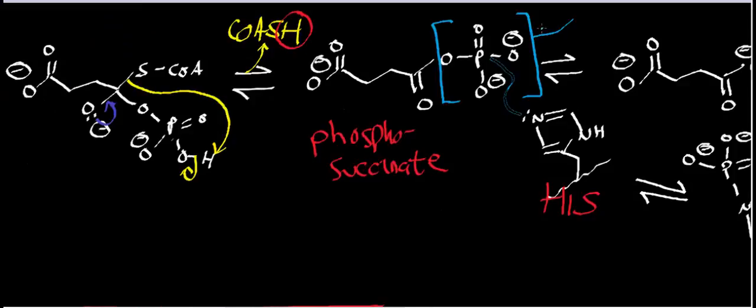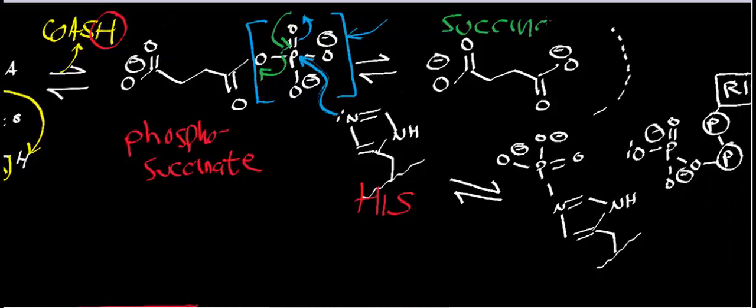Keep in mind, this phosphate already has tetrahedral geometry — it's sp3 hybridized. Whenever this histidine residue attacks this phosphorus atom, it's going to do a nucleophilic substitution and you're going to get a trigonal bipyramidal intermediate. The intermediate will collapse, and the leaving group will be succinate. This molecule over here is succinate.